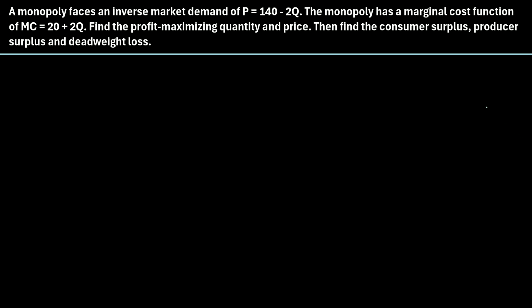Let's jump into an example. A monopoly faces an inverse market demand of P = 140 minus 2Q, where Q is the quantity. The monopoly has a marginal cost function of MC = 20 plus 2Q, again where Q is the quantity produced.